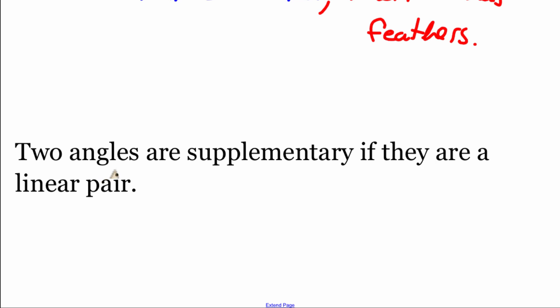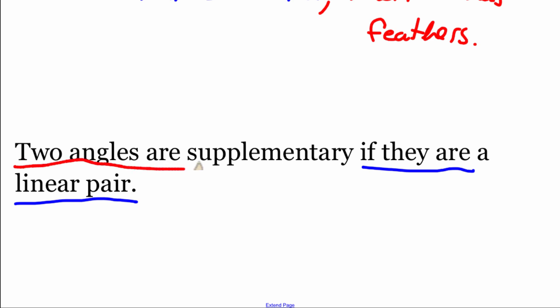If we look at this next one, it says 'Two angles are supplementary if they are a linear pair.' When we're working on this one, we need to identify the hypothesis and the conclusion. This one's a little bit out of order — I actually see an 'if' on the end, so I'm going to make that my hypothesis for this conditional statement. If we're dealing with angles that are a linear pair, then the conclusion would be the other portion: that these two angles are going to be supplementary.